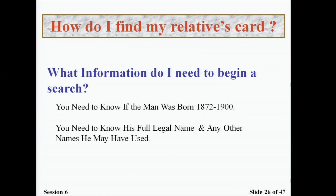To begin your search, you need to know when the man was born. Men born between 1872 and 1900 were registering for the draft. You also need his full name and any other names he may have used. Many registrants used nicknames, so if you don't find someone under their legal name, try any other name the family used for that person.